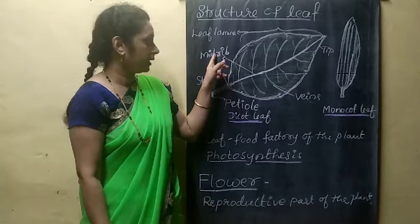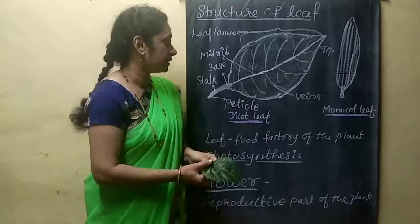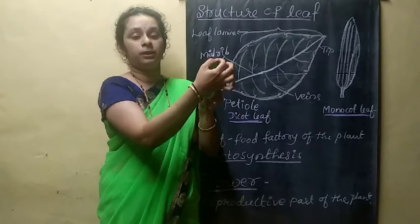The midrib is the base of the leaf, and in between you will come across thin lines arranged in the form of a network — those are called veins. At the top you will come across a small portion; that is considered the tip of the leaf.